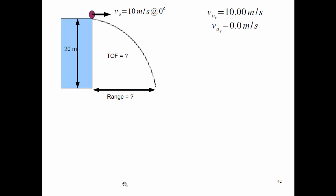Let's take another example: fire something horizontally off a cliff. This means there's no initial Y velocity. The initial X velocity is 10 meters per second. No matter where we are along the trajectory, the X component stays at 10 meters per second, while the Y component of velocity gets larger and larger negative. We want to find the distance from the bottom of the cliff to where it lands.